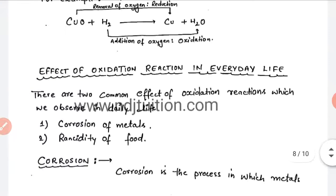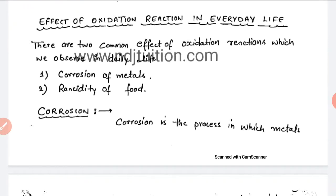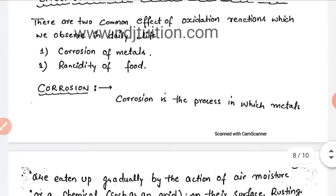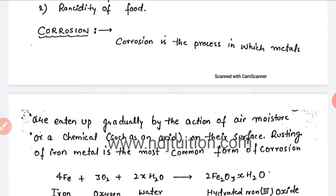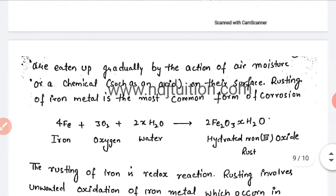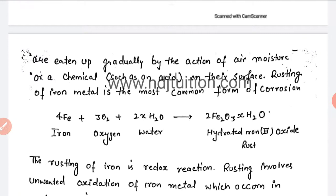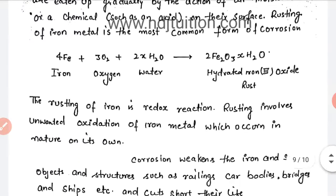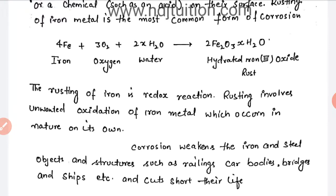Next is the effect of oxidation reactions in our daily life. There are two common effects: first is corrosion of metals, and second is rancidity of food. Corrosion is the process in which metals are eaten up gradually by the action of air or moisture in a chemical reaction on their surface. Rusting of iron is the most common example of corrosion: 4Fe + 3O2 + 2xH2O forms Fe2O3·xH2O. Corrosion weakens iron and steel objects such as railings, car bodies, bridges, and ships, cutting short their life.